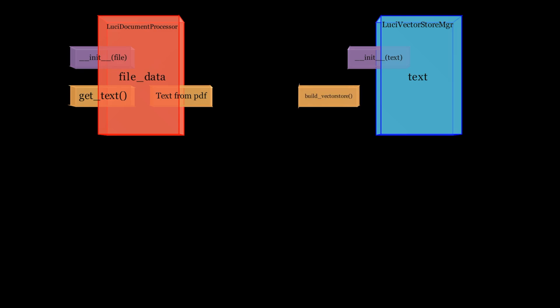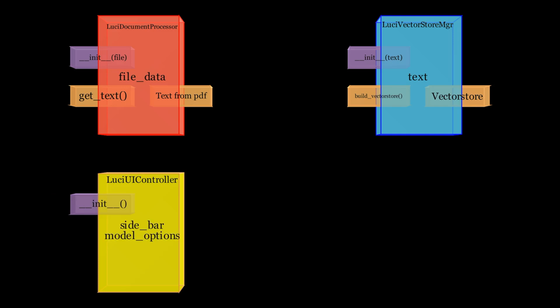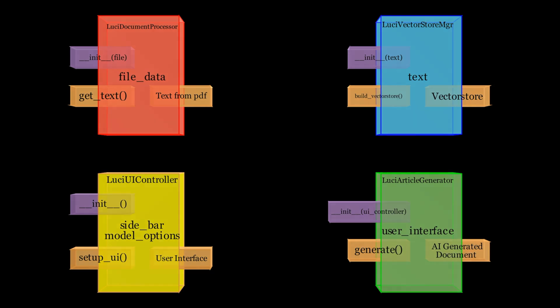The first is the document processor, which strips out all of the text from supplied documents. The second is a vector store manager, which vectorizes this text and stores it in a vector database. The third component is the UI code for handling configuration prompts and supplying the necessary style and source documents. And finally, the article generator class, which uses our large language model, our prompt and our RAG doc store to generate our article for us.